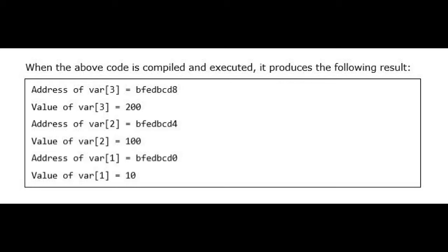When the above code is compiled and executed, it produces the following result. Address of var[3] = bfedbcd8, value of var[3] = 200. Address of var[2] = bfedbcd4, value of var[2] = 100. Address of var[1] = bfedbcd0, value of var[1] = 10.